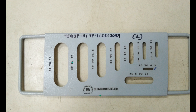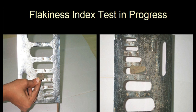For example, the slot marked 63 to 50 indicates that the aggregate is passing from 63 mm and retained on 50 mm — you need to pass it through that specific section only. You collect 200 pieces of aggregate passing from 63 mm and retained on 50 mm, then pass them through that particular slot with the specific thickness.